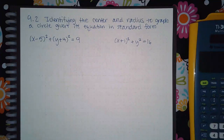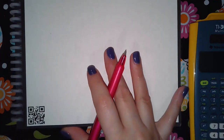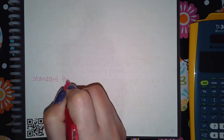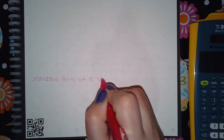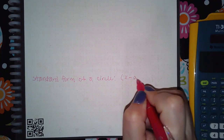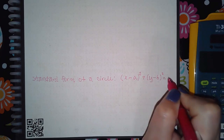Here we have 9.2: identifying the center and the radius to graph a circle given its equation in standard form. The first thing we need to know is the standard form of a circle. The standard form of a circle is: x minus a, squared, plus y minus b, squared, equals r squared.